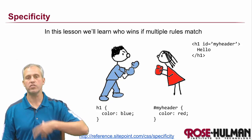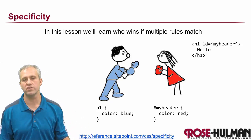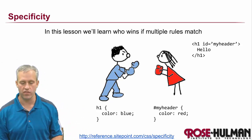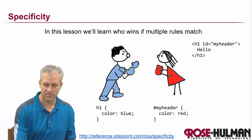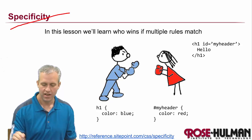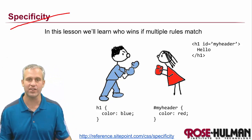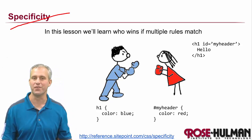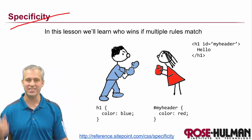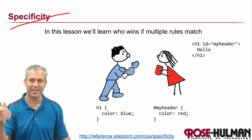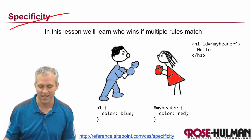We're going to keep learning some more about CSS selectors. The next thing we're going to talk about is specificity. I love this lecture because of all the fun words — there's combinators, and then even better than that is specificity.